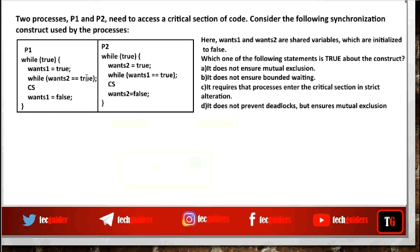But what about deadlock? Is there a condition where both flags are set to true at the same time and both processes are waiting for each other to enter the critical section? Suppose P1 executed once1 equals true. After that, suppose P1 was preempted and P2 got the processor. P2 also wishes to enter the critical section, so once2 equals true. But since once1 equals true, P2 waits in the while loop. After some time P1 gets the processor and also waits in the while loop because once2 is also true. Both flags are set to true at the same time and both processes are waiting — leading to deadlock. So the answer is D: it does not prevent deadlock, but there is mutual exclusion.